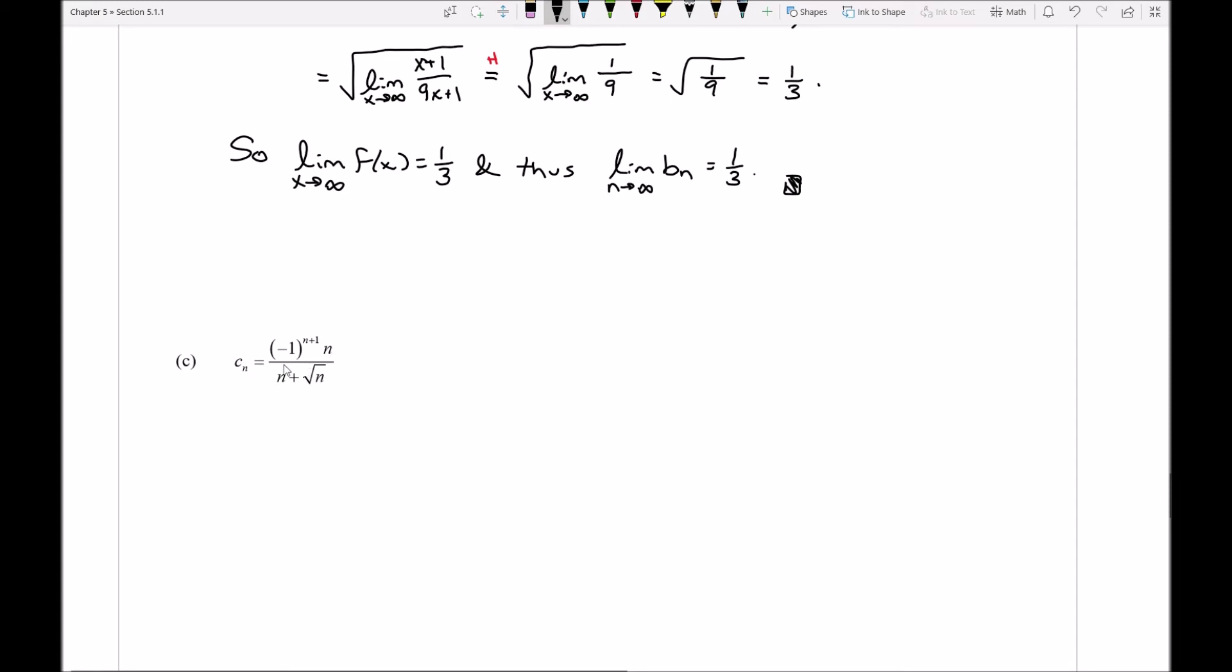Okay, so how about we go ahead and do this. So I'll say, how about we note that the absolute value of c sub n is the absolute value of our negative 1 to a power. Okay, and let's see here,